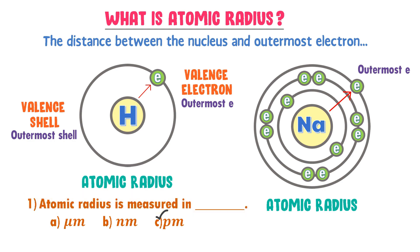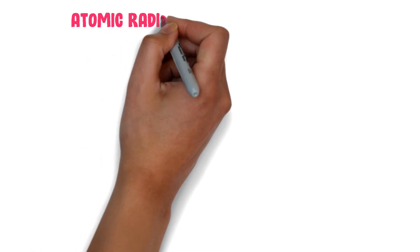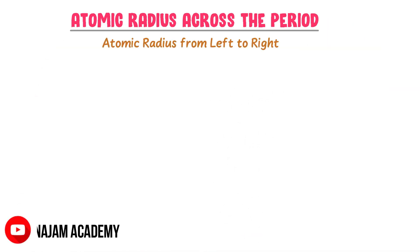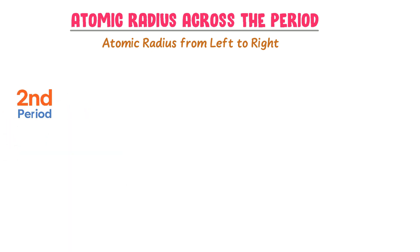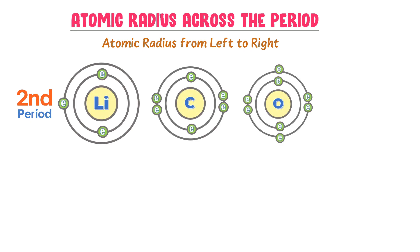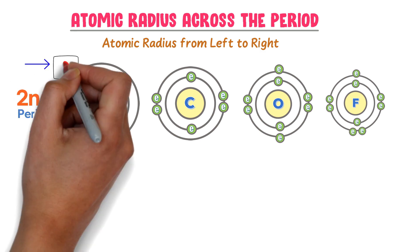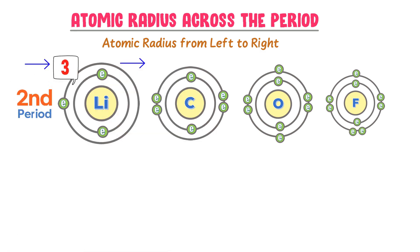Now let's look at the periodic trends of atomic radius. Atomic radius across the period means atomic radius from left to right in the periodic table. For example, in the second period of the periodic table, there are lithium, carbon, oxygen, and fluorine. The atomic number of lithium is 3, the atomic number of carbon is 6, the atomic number of oxygen is 8, and the atomic number of fluorine is 9.